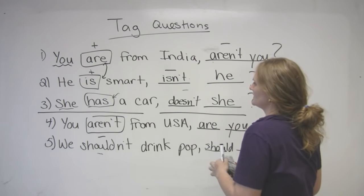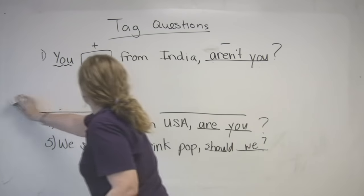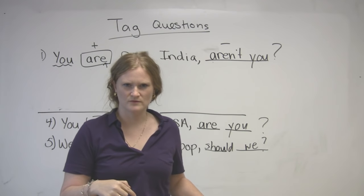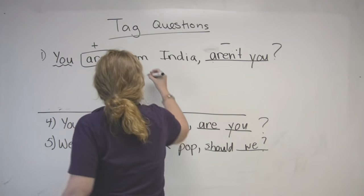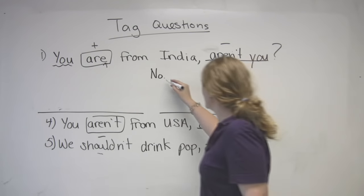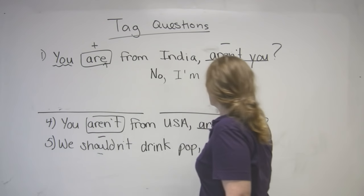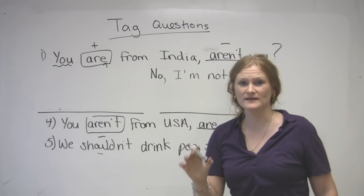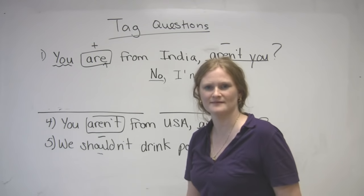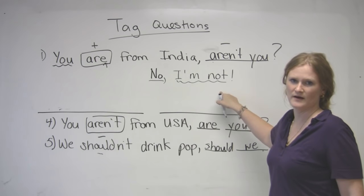So let's take our first question. If someone said to me, 'You're from India, aren't you?' — I want to say no. That's the easy answer. 'You're from India, aren't you?' No. So we can say no, I'm not. If you want to make it really easy, just say no. 'You're from America, aren't you?' No — and smile. If you want, you can say: 'No, I'm not.'